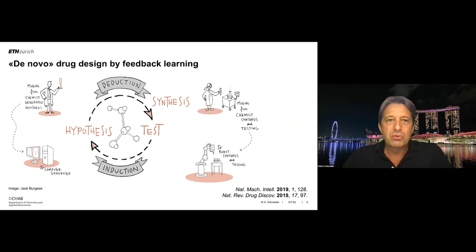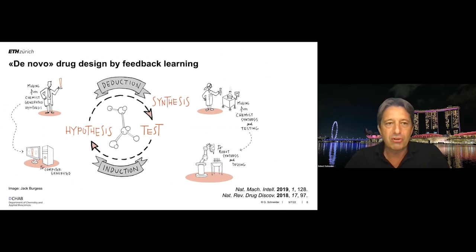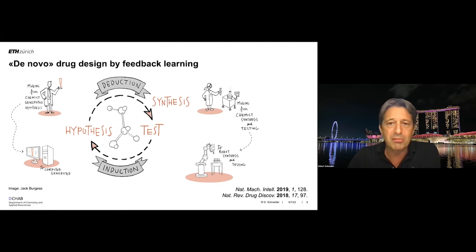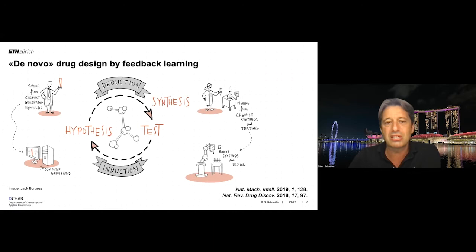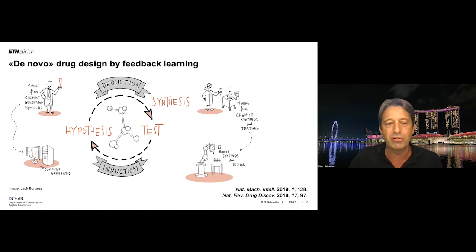We want to design molecules de novo — from scratch — using feedback learning. This is the age-old cycle of deduction and induction: we start with a hypothesis, go to synthesis in the laboratory, test compounds in biological assays, and feed results back to an intelligent decision-making system to update our hypothesis — in this case, a small molecular structure. AI now allows us to augment human creativity and hypothesis generation by machine learning systems.